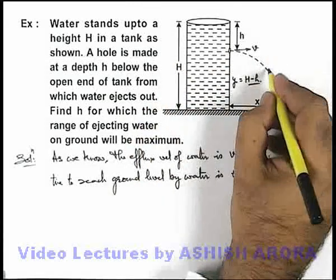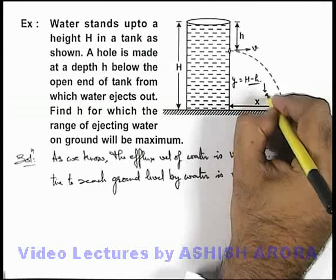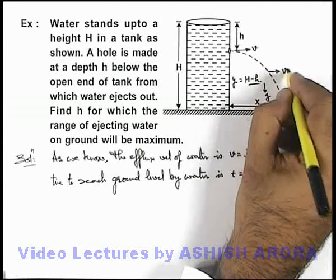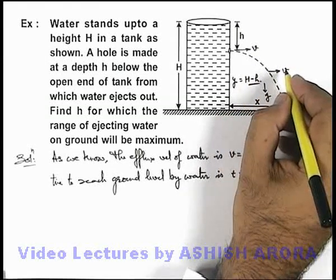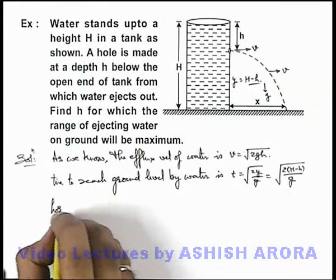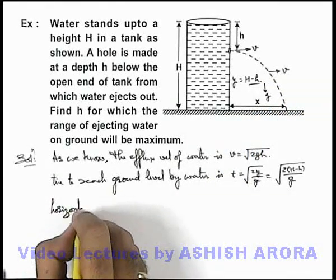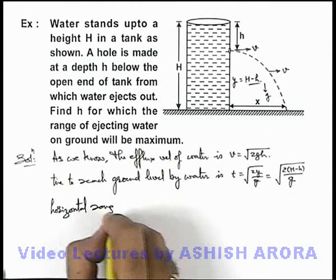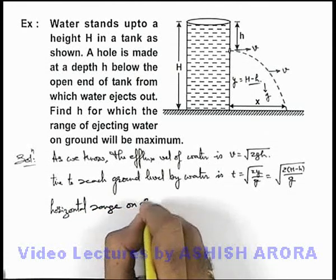And throughout motion, as g is acting in downward direction, we know the speed of water ejected out in horizontal direction remains same. So we can simply calculate the horizontal range on ground.